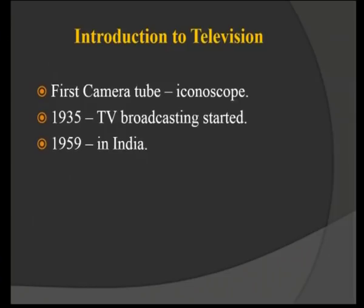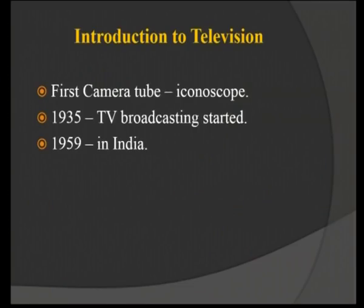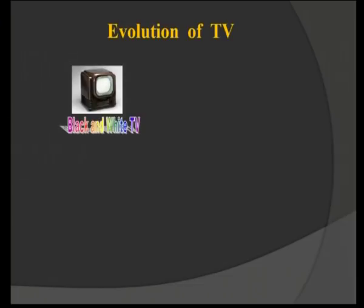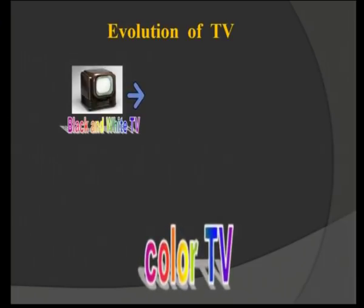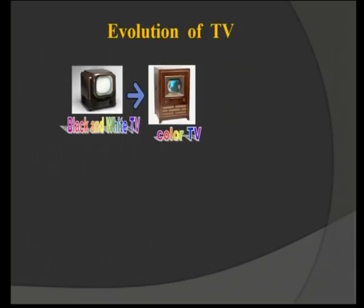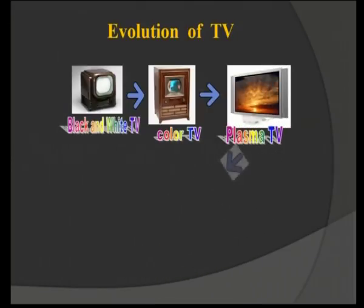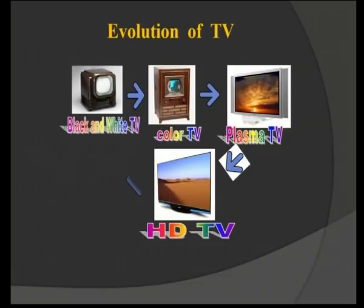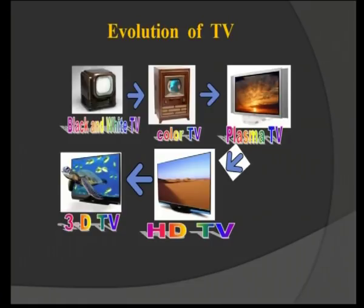In the year 1935, TV broadcasting started. In the year 1959, TV came to India. These are some important general knowledge points about TV. The evolution starts from black-and-white TV with a CRT tube, which was bigger in size. Next came color TV, also using a CRT tube. Then came plasma TV, and later LCD TV, which is thinner in size. After plasma TV, the CRT was replaced, and today we use 3D TV technology. This is how the evolution of TV occurred.